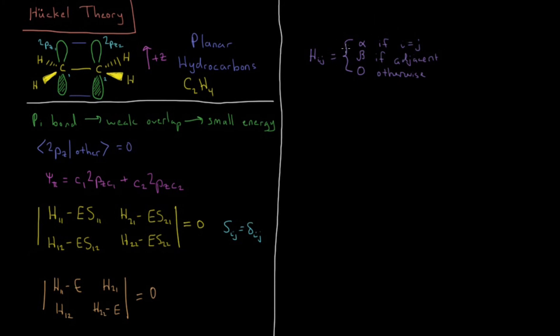So let's apply this to our matrix here, see what we get. So in this case, H11, i equals j, that's alpha, so I have alpha minus E. If they're adjacent, H12, 1 and 2 are adjacent to one another on the chain, so that gives us beta. Same thing for H21, H22 is also alpha because i and j are the same, minus E equals zero.